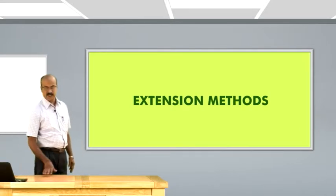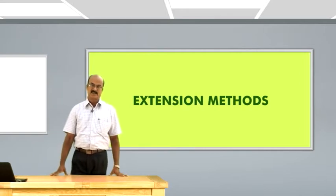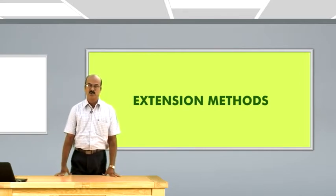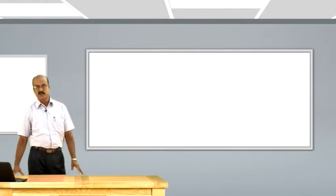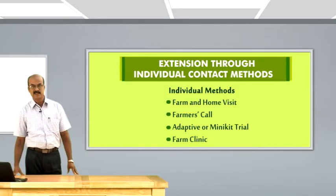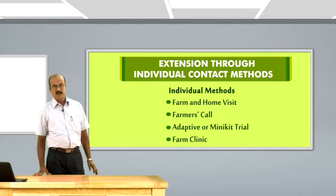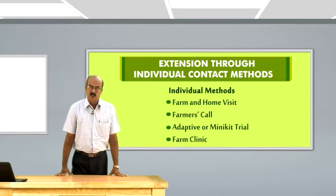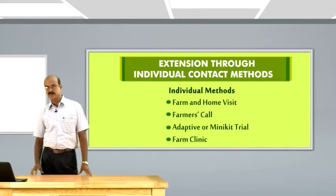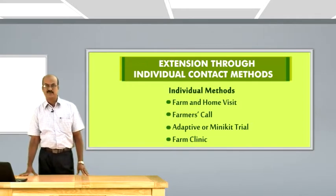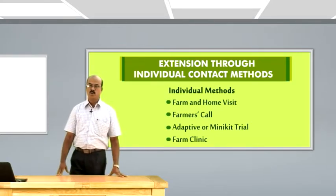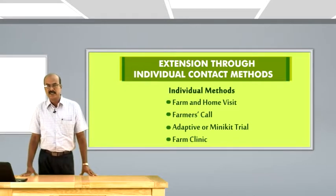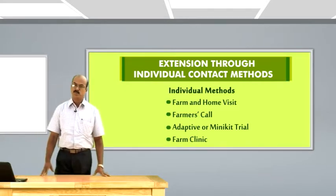Under individual contact, the name itself symbolizes that it is individually contacting the clients or the farmers, depending on the availability of time. There are different methods adopted at the individual contact level. The first is farm and home visit, where the extension worker or change agent meets the clients at their farms or at their home as a one-to-one, face-to-face contact. It is more influential in gaining the confidence and conviction of the farmers.